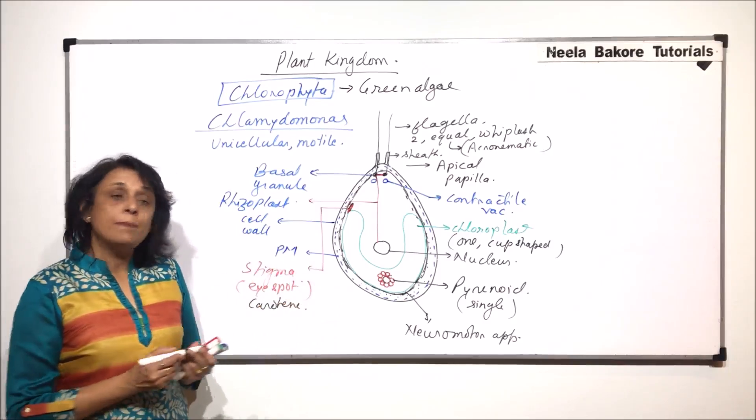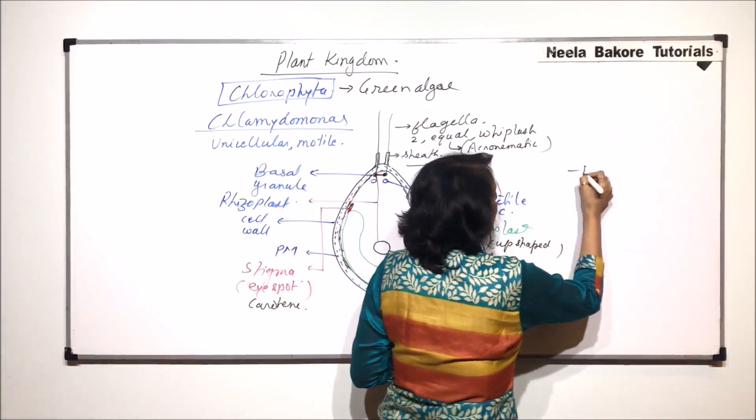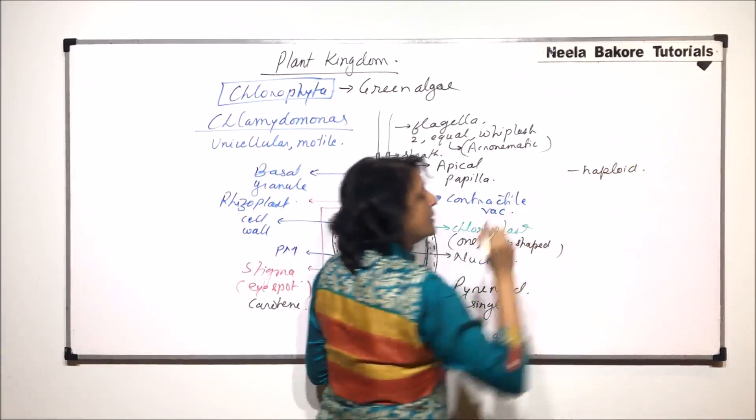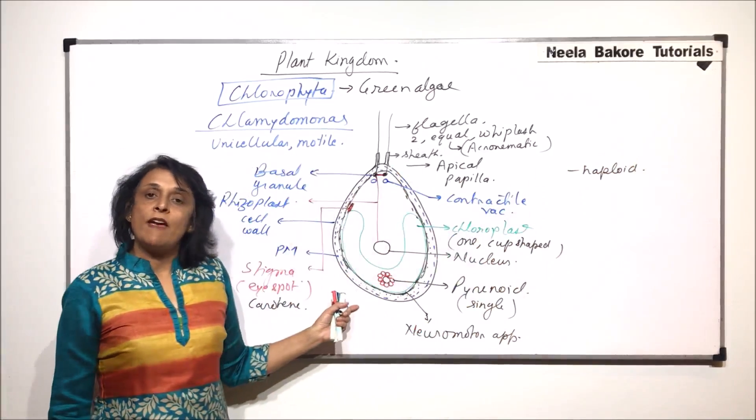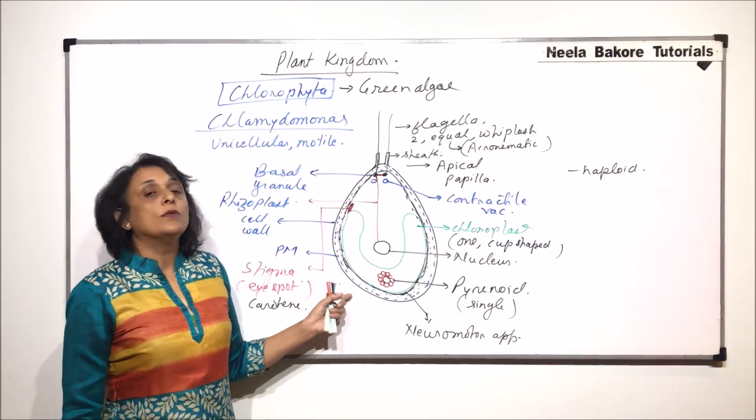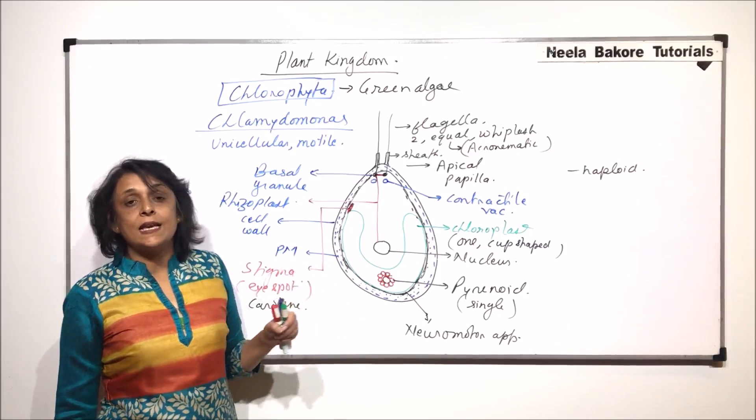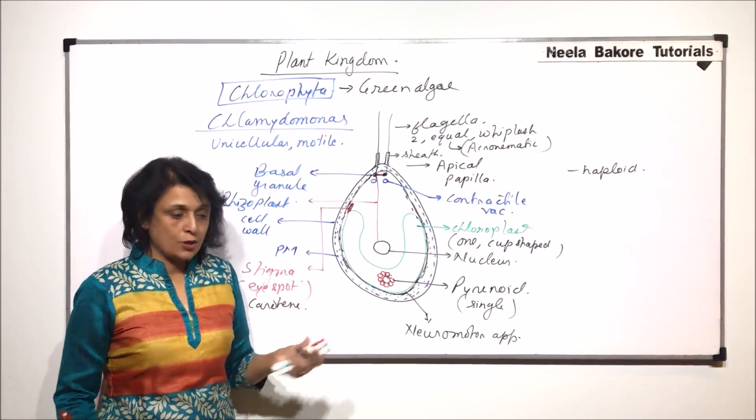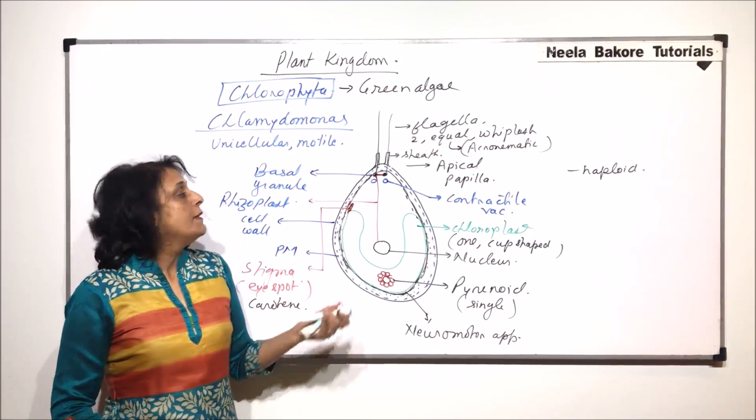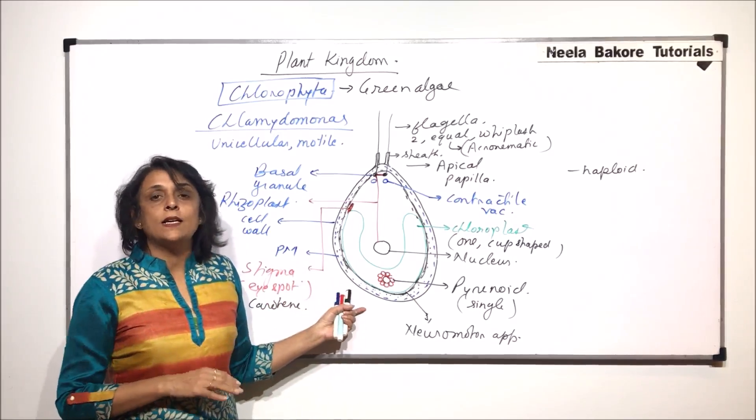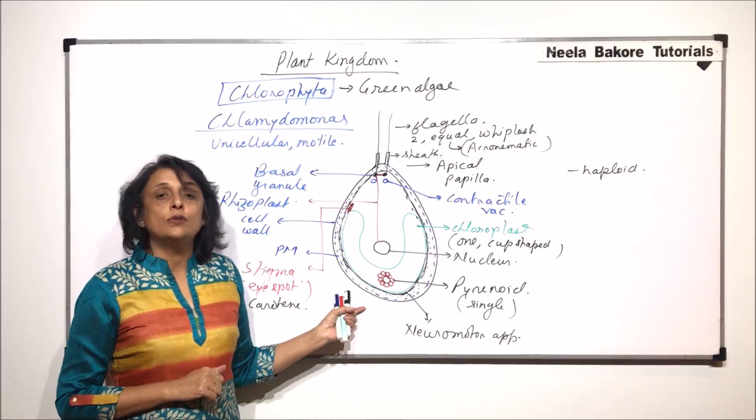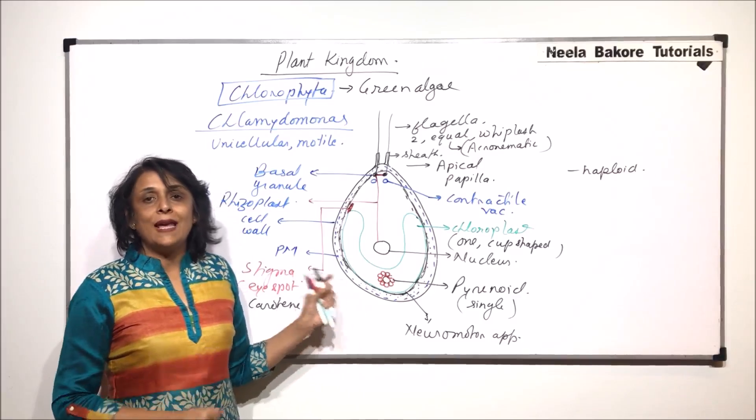This is haploid. Normal life is spent in the form of haploid cells. The reproduction is asexual as well as sexual. So for that we will discuss the life cycle of Chlamidomonas and how they reproduce asexually and sexually.